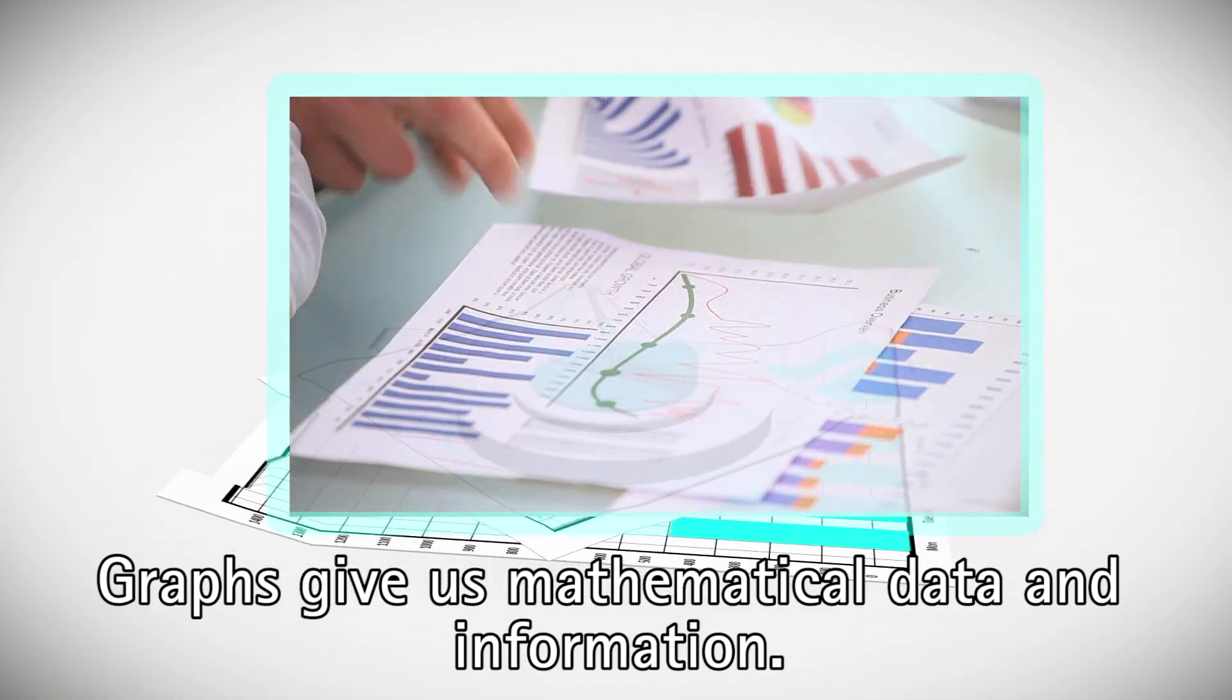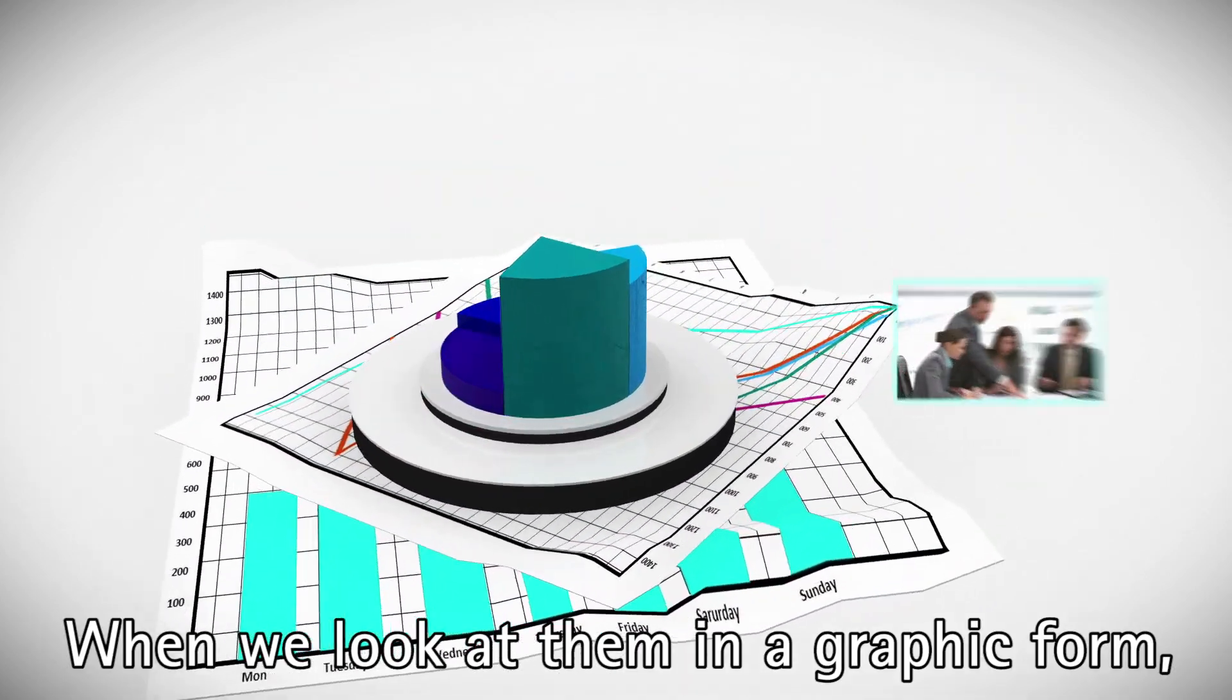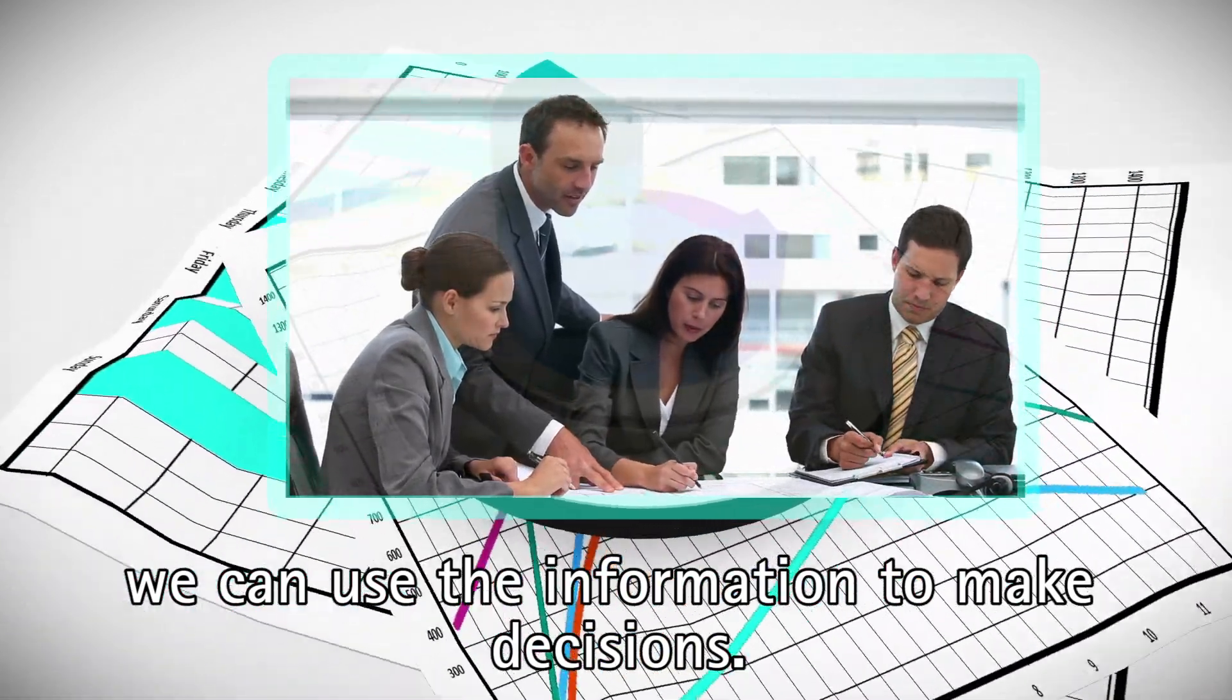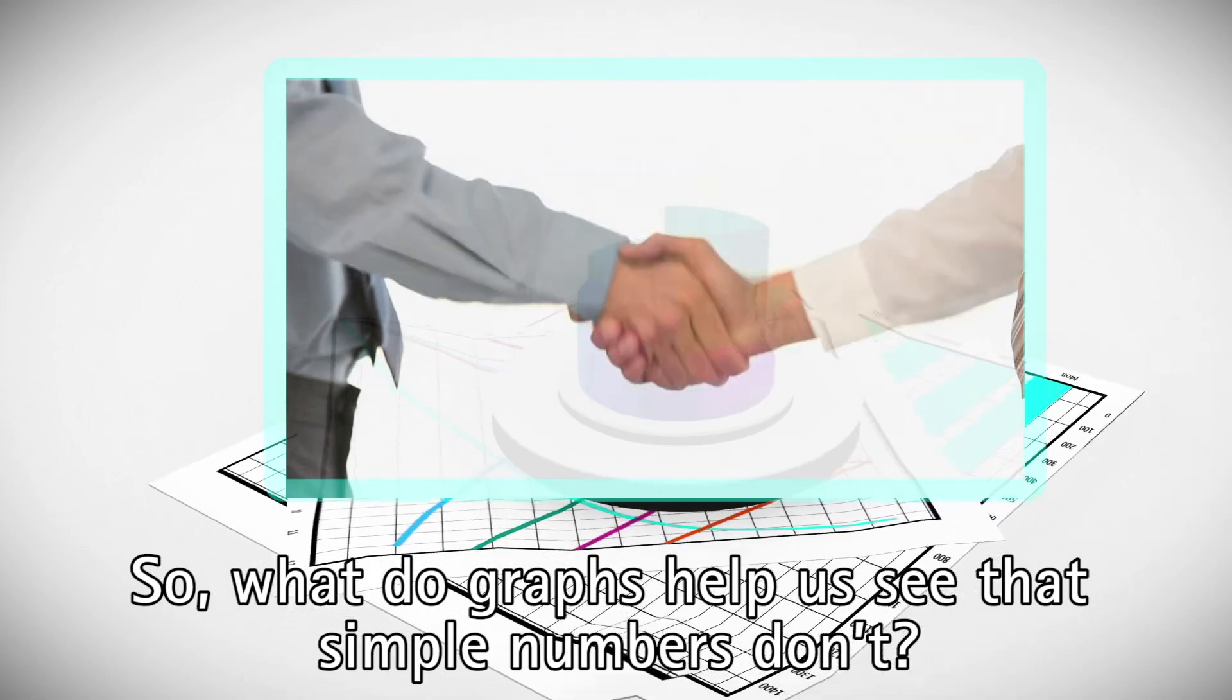Graphs give us mathematical data and information. When we look at them in a graphic form, we can use the information to make decisions. So, what do graphs help us see that simple numbers don't?